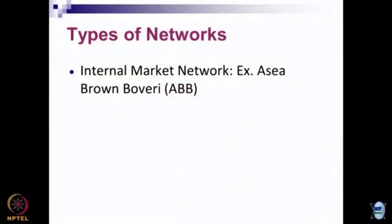Networks can be of various types. An internal market network is where the organization is built around many small business units. One example is ABB, which operates predominantly in segments like commuting, modern electronics, robotics, telecommunications, and production. ABB has more than 1,000 subunits and more than 4,000 profit centers. These subunits and profit centers keep interacting and having business relationships with each other, and that is how the organization operates across sectors and different areas of expertise.